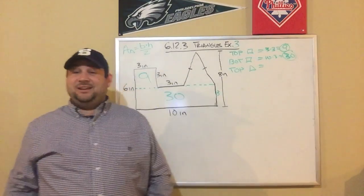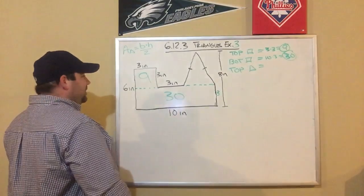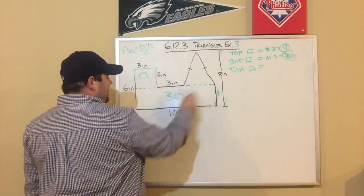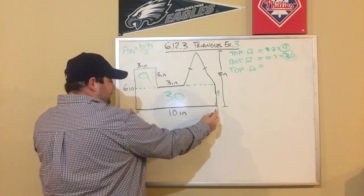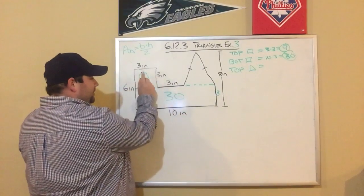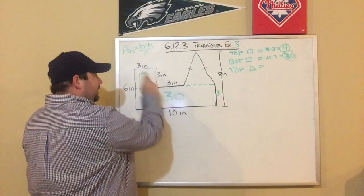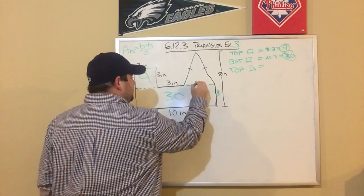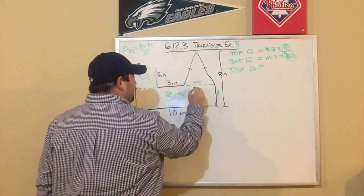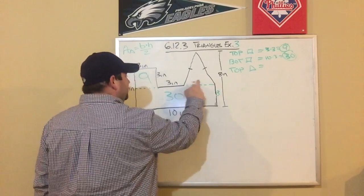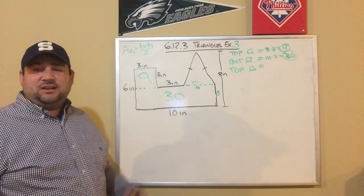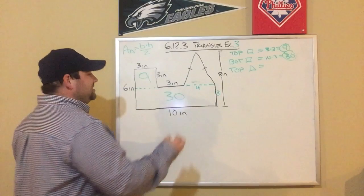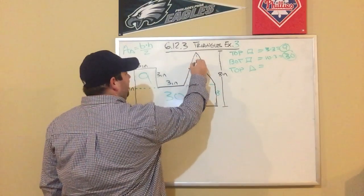Now I've got to figure out the triangle — this one's a little tricky. The whole bottom is 10. From here to here is 3, and from here to here is 3, so that's 6. That means this section is 10 minus 6, which is 4. I can call that the base of the triangle, but I still need the height.